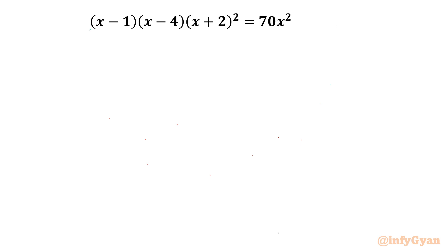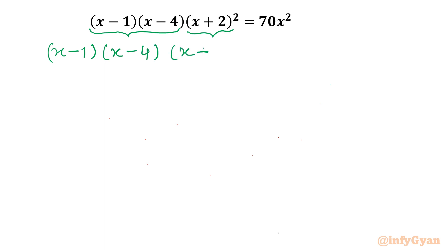I will consider these two terms together and this one as it is. But before that I will move 70x² towards the left. So I will write: (x − 1)(x − 4)(x + 2)² − 70x² = 0.